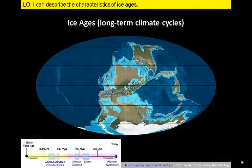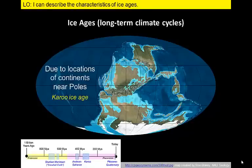So why do we get ice ages? Ice ages last for millions of years and are generally related to the relative positions of continents and oceans. Locating continents over a pole allows ice to build up and may result in an ice age. This was the case for the Karoo Ice Age, when several pulses of glaciation occurred over a span of about 100 million years in the Paleozoic Era.